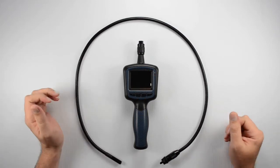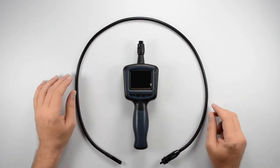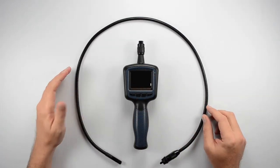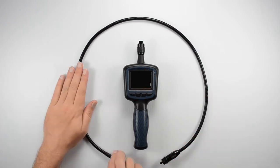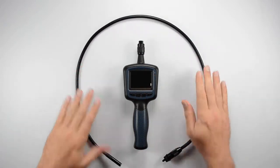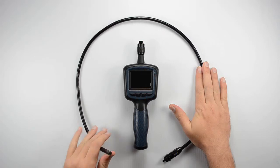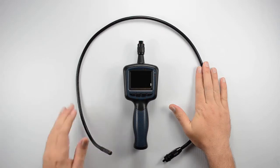This is the unit right here and as you can see it does come with the 3 foot flexible camera tube. This is waterproof and it does have a 9mm wide angle lens which also has adjustable LEDs here at the end of it.